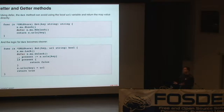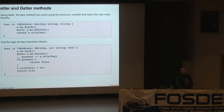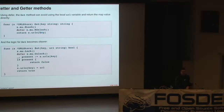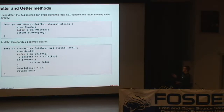We can use defer to simplify our setter and getter methods. Our get method from before used a temporary variable URL. Instead, with defer, we can take the read lock, defer the release of the lock, and then return the value from the map directly without an intermediary variable. Similarly in set, we take the write lock and then immediately defer the release of the lock, so whatever happens when this function returns, that lock will be unlocked. This means we don't have to include unlock twice in the function — once in each return statement. This is the most common use of defer.